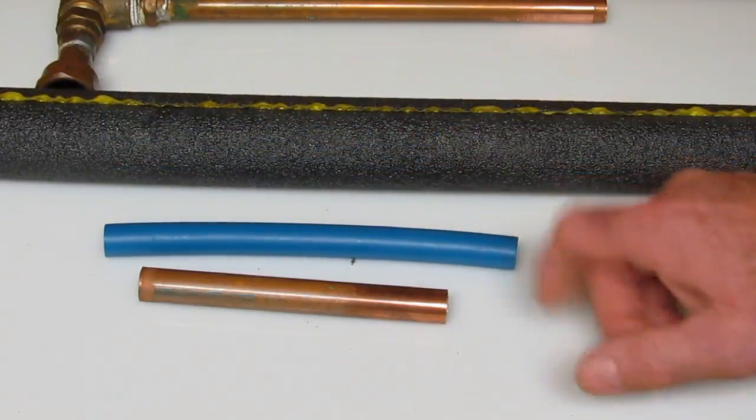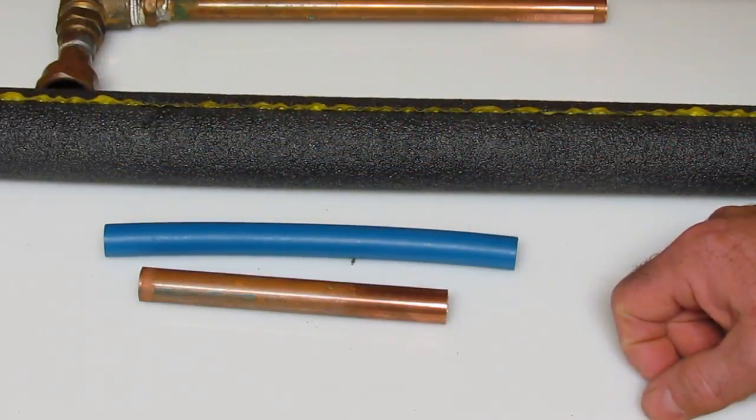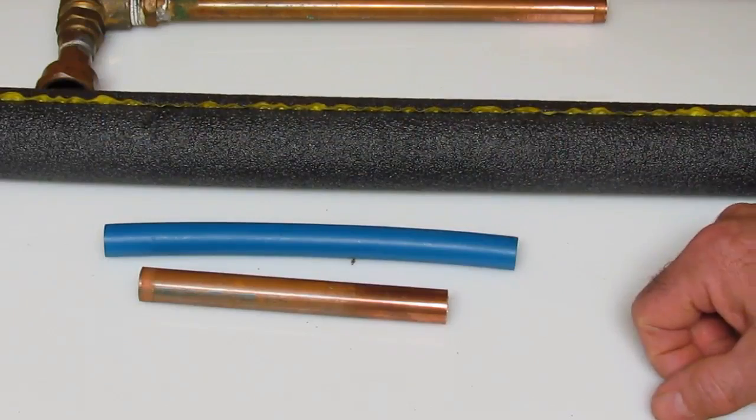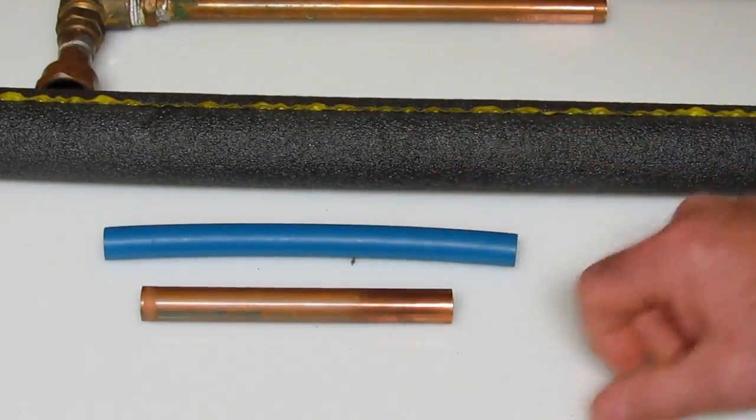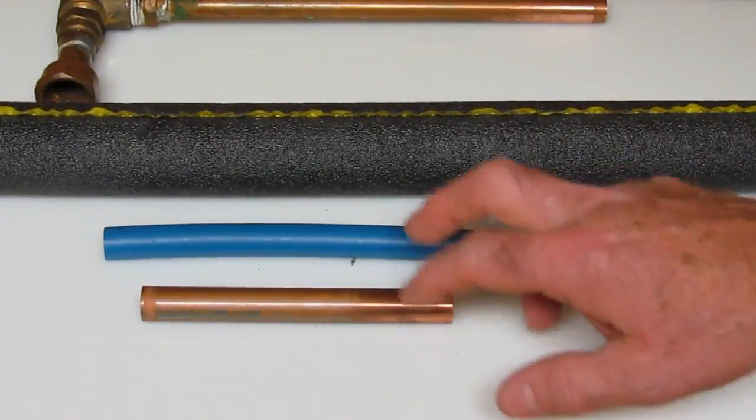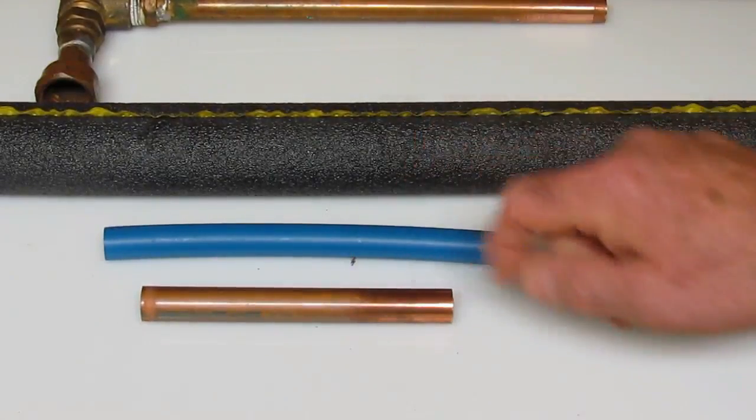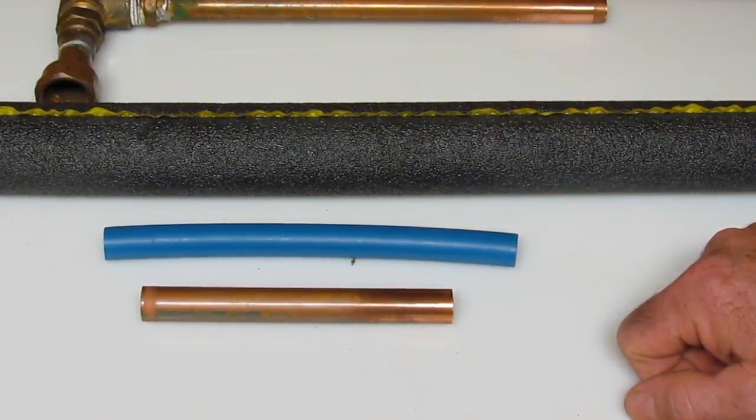You can use PEX, it'll freeze, and in three months time you'll get your water back. Copper, if you run it in the attic, insulate it, it's going to freeze and split, and you're going to get your water in your house when the spring arrives.